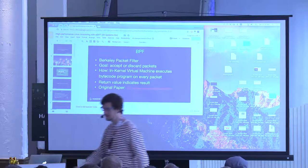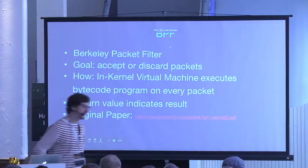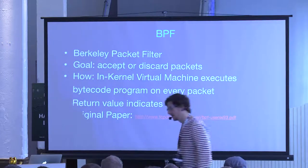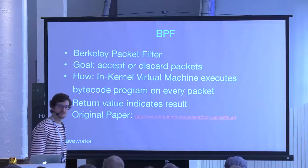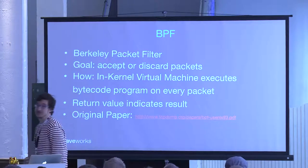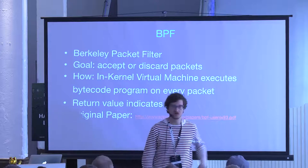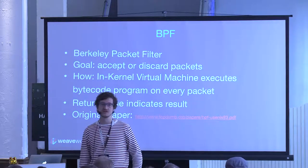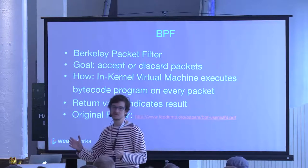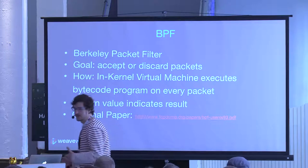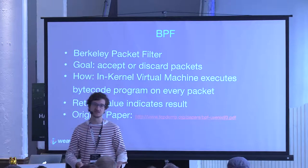Otherwise it would be super inefficient because you'd need to forward every single TCP packet to user space and filter it there. In 1992, the Berkeley Software Distribution Unix (BSD) introduced something in a paper — which is really interesting and I encourage you to read — called the Berkeley Packet Filter. Its goal is to filter packets in the kernel based on a bytecode program executed by a virtual machine, which runs on every packet for a given networking interface, deciding whether the packet is filtered or not.